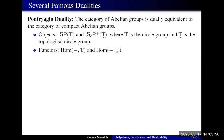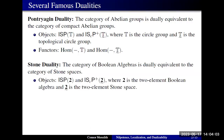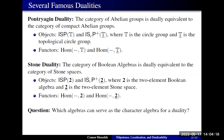This isn't the only duality that takes this form. We also have Stone duality, which is very similar — it gives us a dual equivalence between the category of Boolean algebras and the category of Stone spaces. Once again, our objects are given by pre-varieties, our functors are both representable — they're both hom-functors given by spaces and characters. The question is: what is so special about the circle group, or about the two-element Boolean algebra, that lets it serve this role?